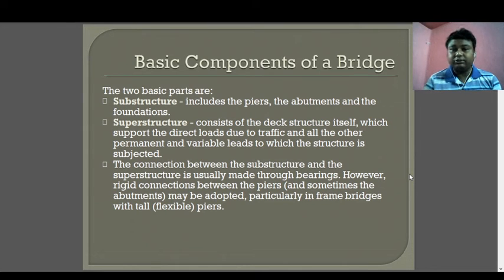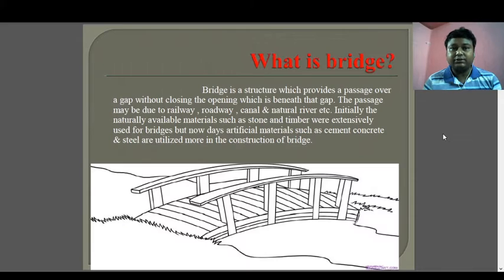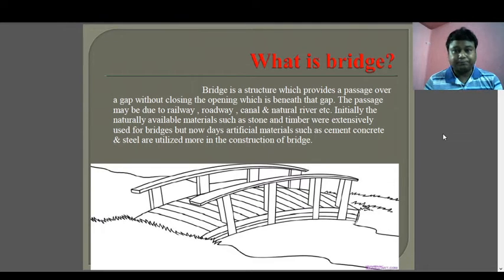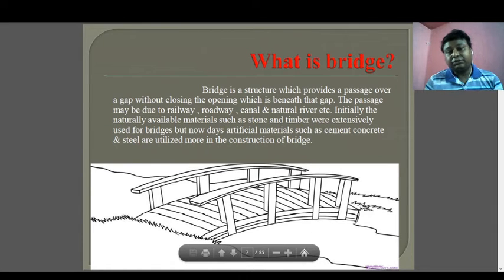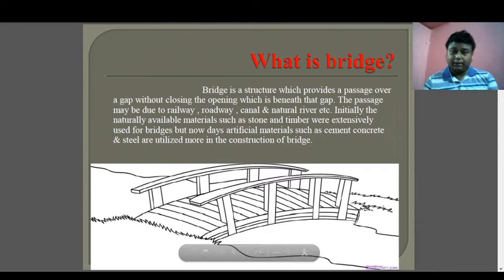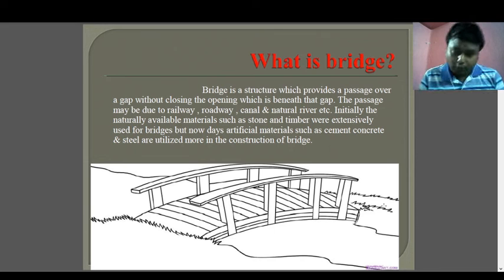A bridge is a structure which provides a passage over a gap without closing the opening beneath. Suppose this is one portion and another portion with some water bodies between them — without closing this water body we provide some structure to move from one portion to the other, and this is called a bridge. The definition of bridge is known to all, perhaps not in technical terms but in general terms.